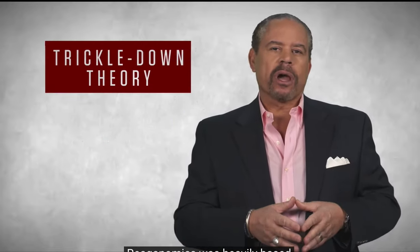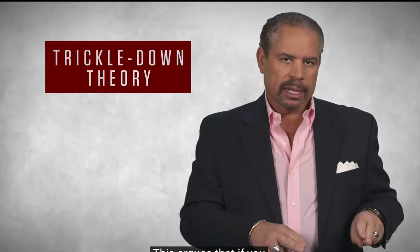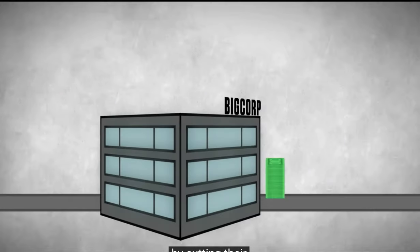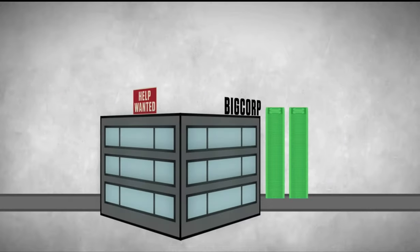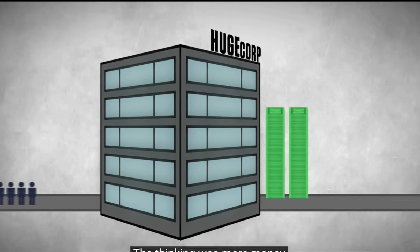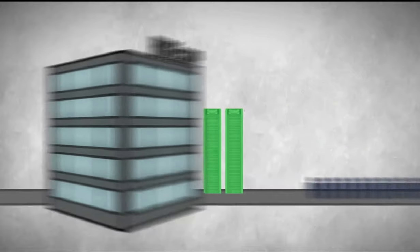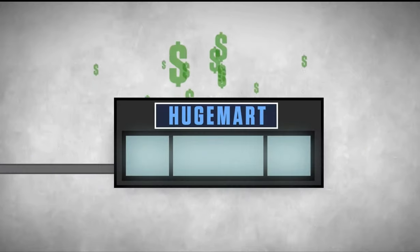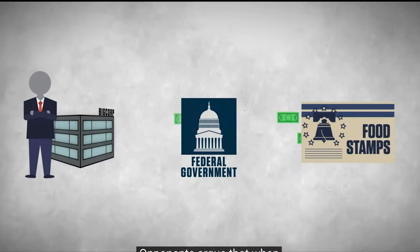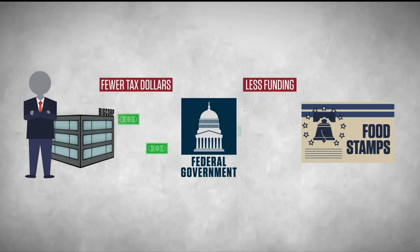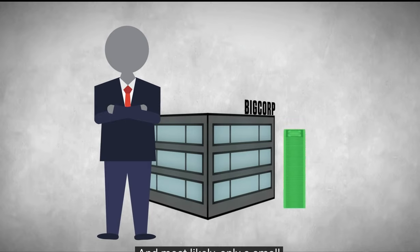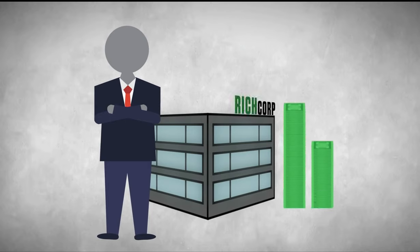Reaganomics was heavily based on the trickle-down theory. This argues that if you lower costs for corporations by cutting their taxes, businesses use those savings to invest. The thinking was that more money for corporations would mean more jobs and higher wages for workers, thus increasing spending. But trickle-down is a controversial idea—opponents argue that when corporate taxes are cut, domestic social programs suffer, and most likely only a small handful of rich individuals at the top become even richer.